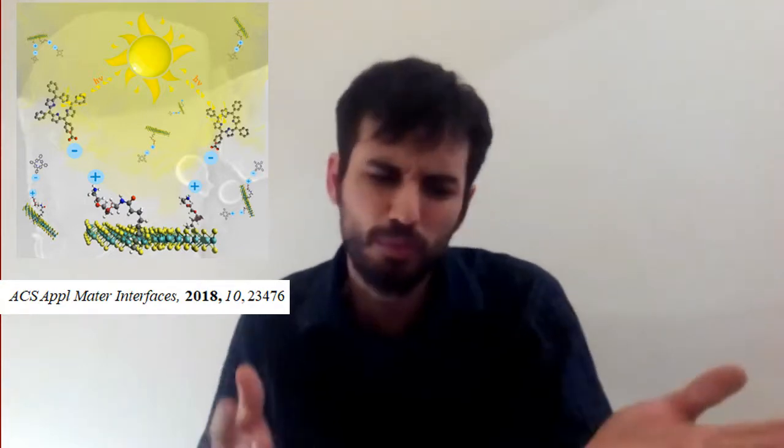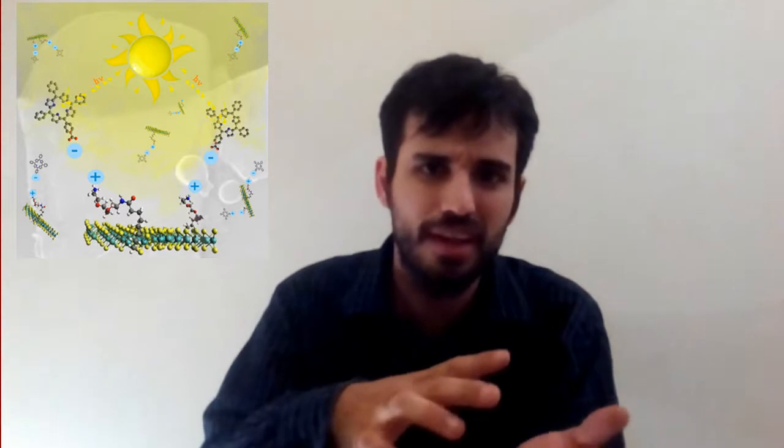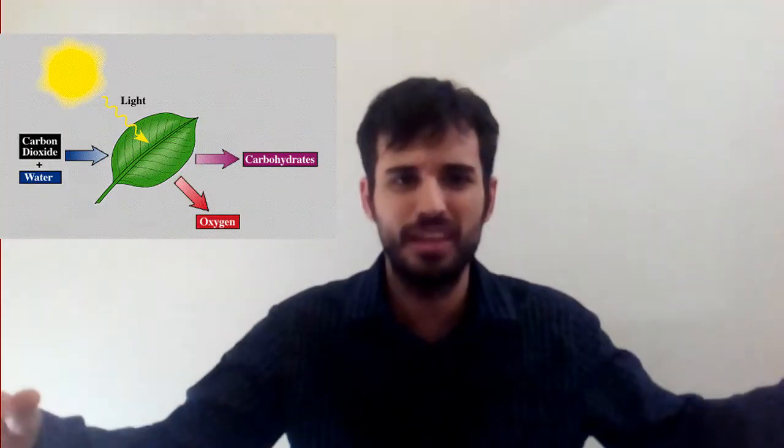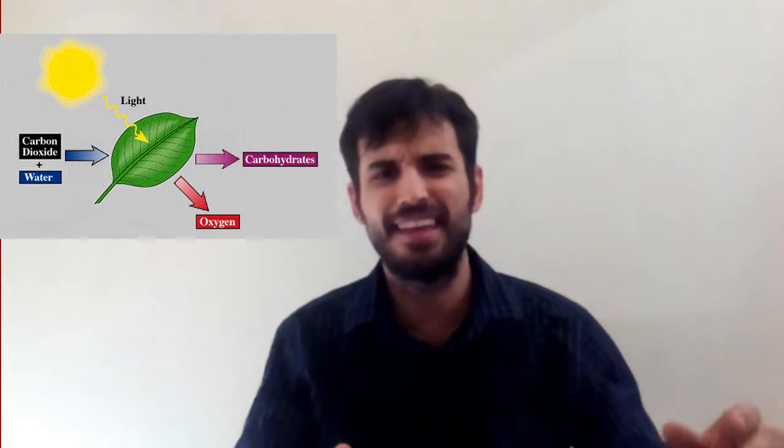If we take molybdenum disulfide and we put some chromophores — for example, porphyrins — something that absorbs light and emits light, if we could put both materials together, we will have a kind of electron-donor–electron-acceptor system. So finally, we will try to replicate the photosynthesis system and make a new generation of solar cells.